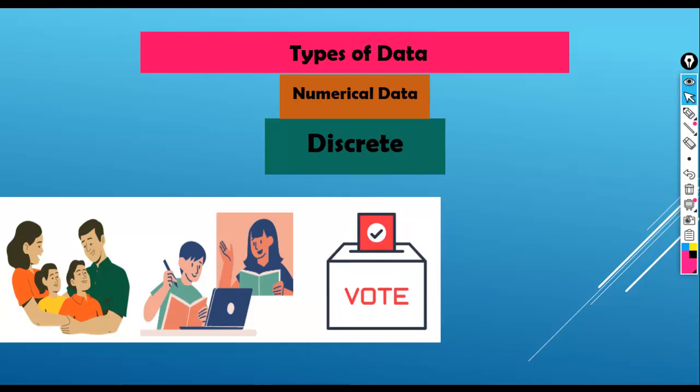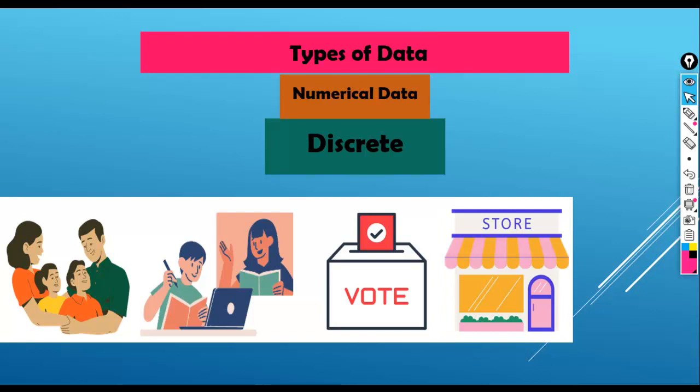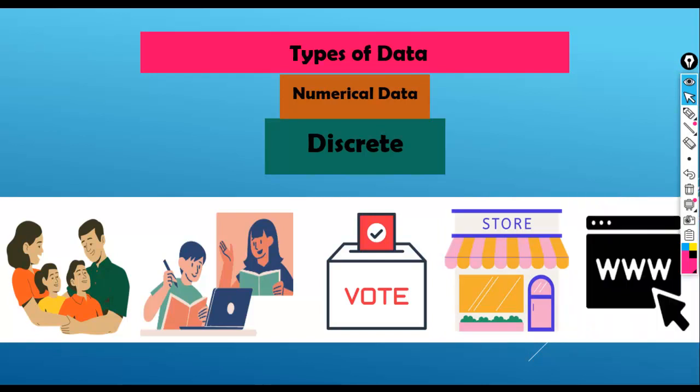Next, the number of votes received by a candidate in an election. Next example, number of customers visiting a store in a given day. Next example, number of times a user clicks on a website. Here you can see all examples contain specific distinct values. That's why it is a part of numerical discrete data.